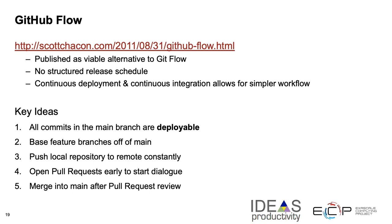GitHub Flow was published as an alternative to Git Flow for projects that don't need a structured release schedule but want continuous deployment. It is a much simpler workflow where all commits in the main branch are deployable. Feature branches are all based off main. Developers push to the remote repository often and are asked to start their PRs early to enable discussions during development, and all PRs are tested and reviewed before merging into main. This is an easy workflow and might be a good starting point for a new project.